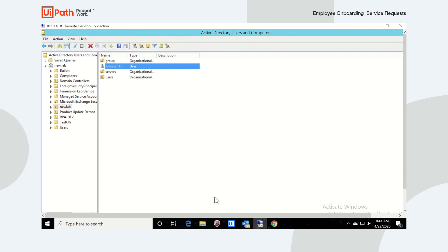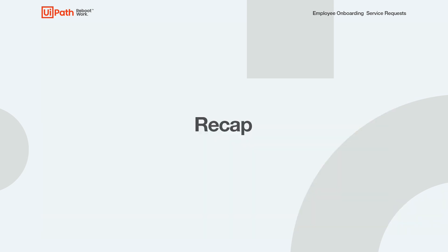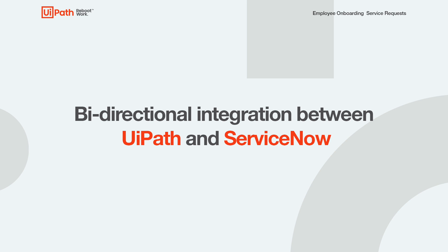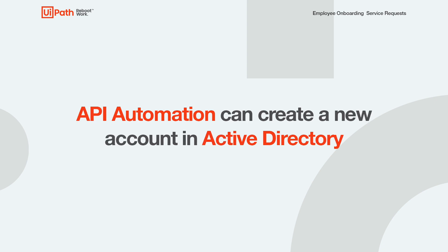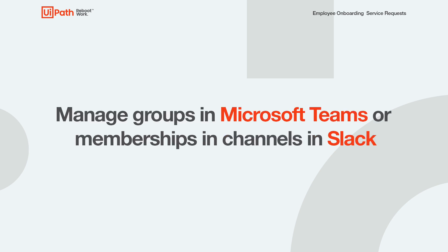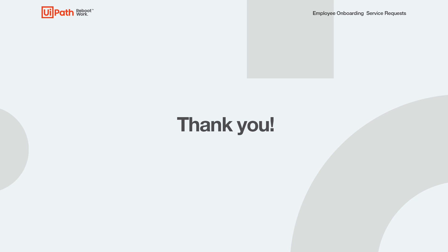That is how UiPath and ServiceNow can work together to automate and reduce the time it takes to provision a new employee. To recap, you saw how the bidirectional integration between UiPath and ServiceNow was used to interact with records in ServiceNow and start UiPath bots to automate the provisioning of a new hire. You also saw how UI automation was used with SAP and how API automation created a new account in Active Directory. This example can be further extended to manage groups in Microsoft Teams or memberships in Slack channels using either UI or API automation. We hope you found this video useful. Thank you for watching.